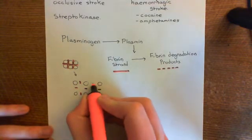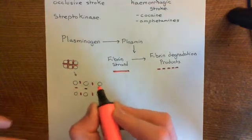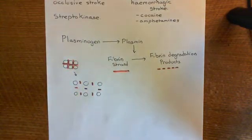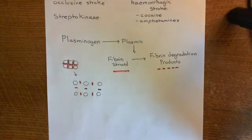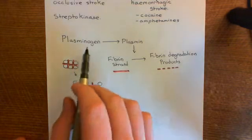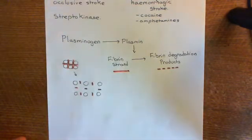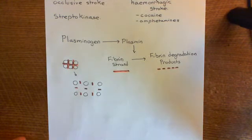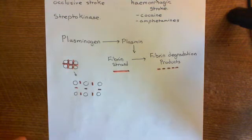Once the fibrin meshwork is no longer holding the platelets together, the platelet aggregation bonds are too weak to keep everything together, so it all just falls apart. By activating plasminogen to plasmin, you can break apart thrombi.